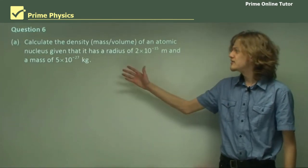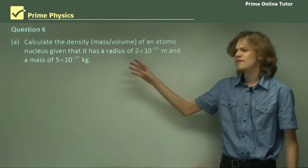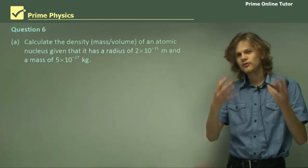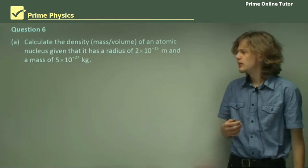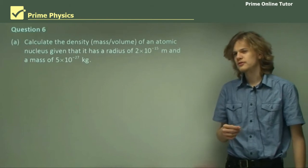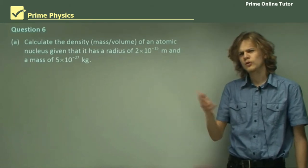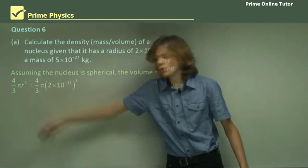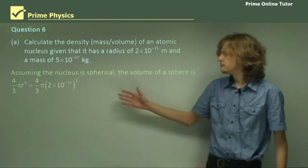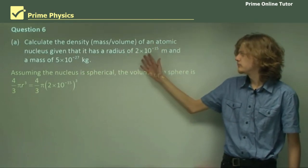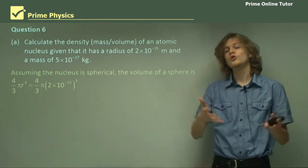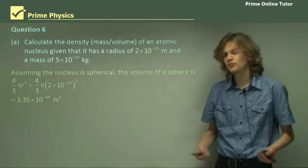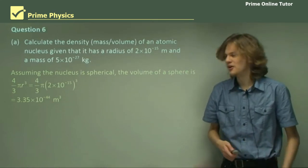Question six. Part A. Calculate the density of an atomic nucleus given that it has this radius and this mass. Now, what's density? It's the amount of mass in a volume. Right? So, if something is very dense, then it's very small and heavy. So, if we have a radius of an atomic nucleus, how do we find its volume? Well, we assume it's a sphere. So, assuming the nucleus is spherical, the volume of a sphere is given by this formula here: four-thirds pi r cubed, which of course we know from mathematics. So, substituting in our value for the radius, we can have this expression for the total volume of the nucleus.